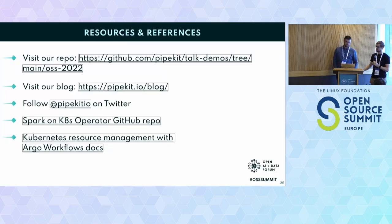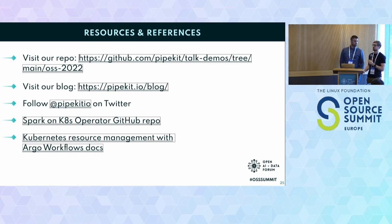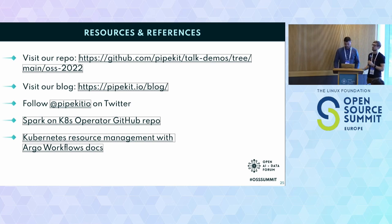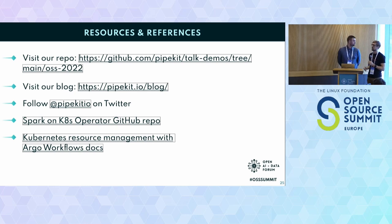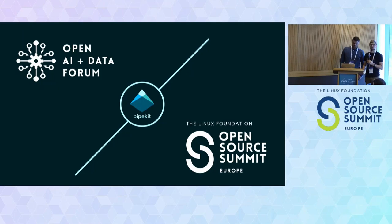That wraps it up. A few extra resources: we have a repo so you can check out all the code we ran today. We also included a cron job that uses Python. You can pull down the workflow template that we've parameterized and start using that. We have a blog that covers more Argo Workflows and Spark topics. If you're going to deploy Spark on Kubernetes, check out the Kubernetes Spark Operator GitHub repo, and check out the Argo Workflows docs for more details on scaling up resources.